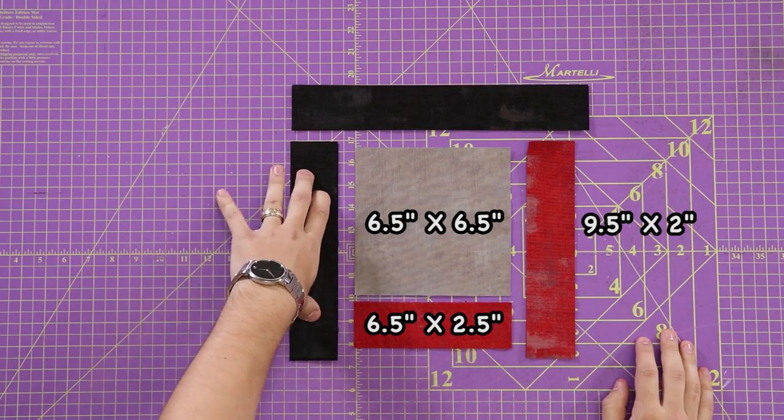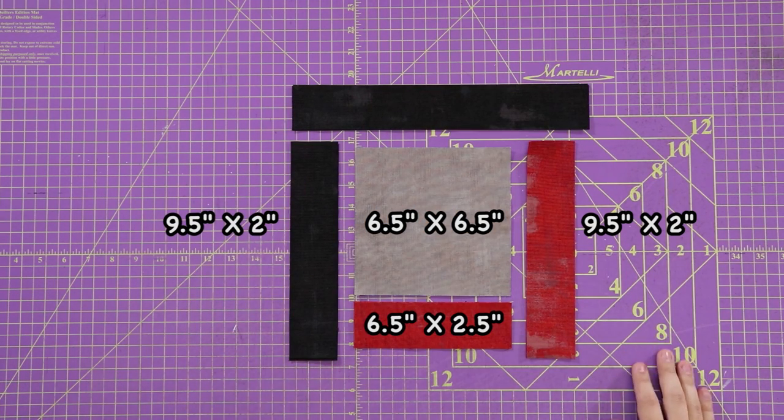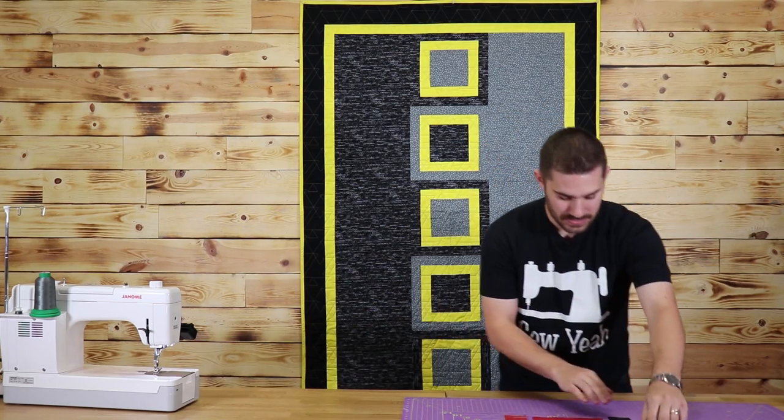My short black piece here is nine and a half by two. And my long black piece is twelve and a half by two. We're going to start sewing right now. Super easy project.